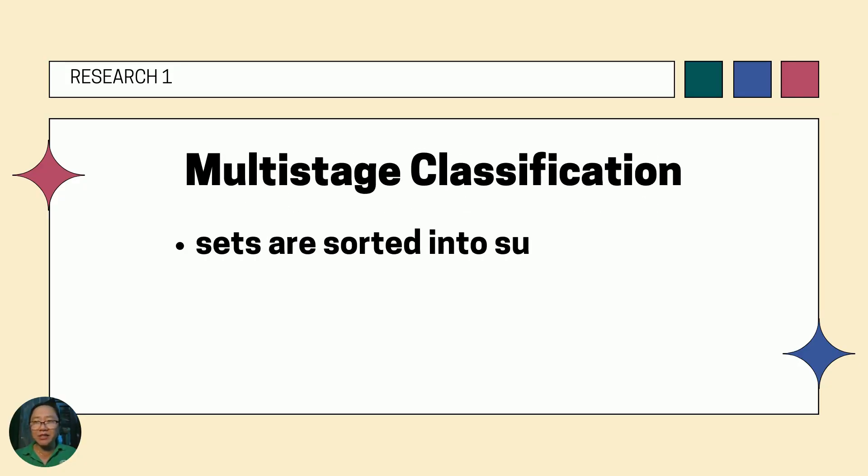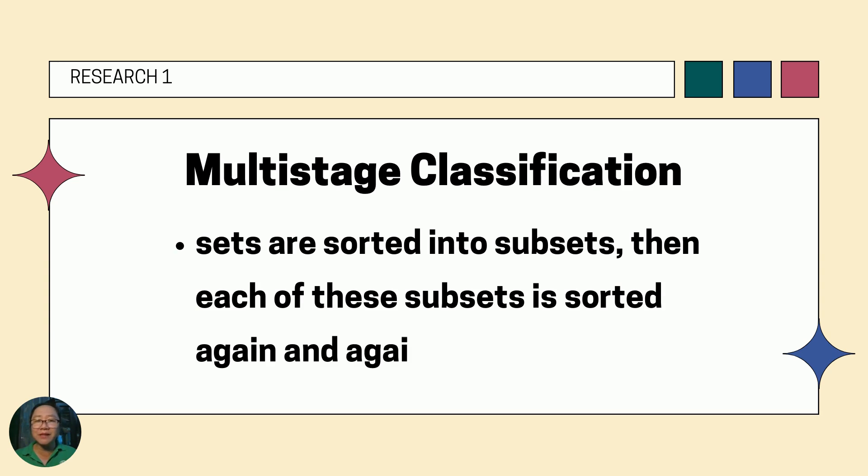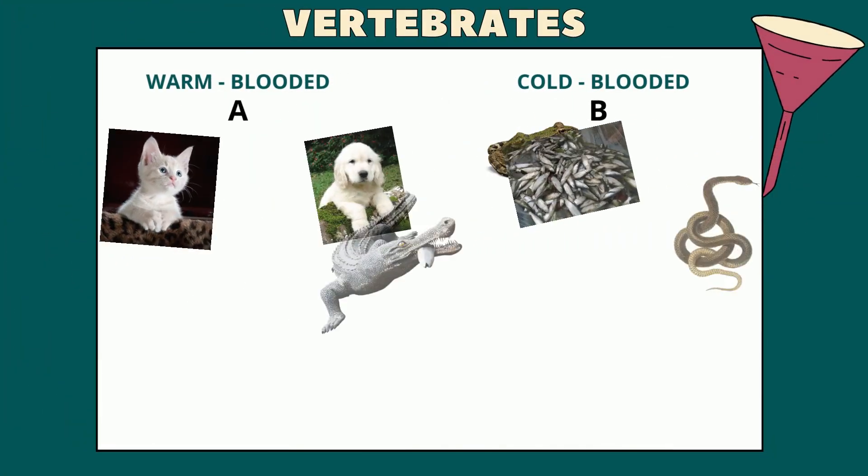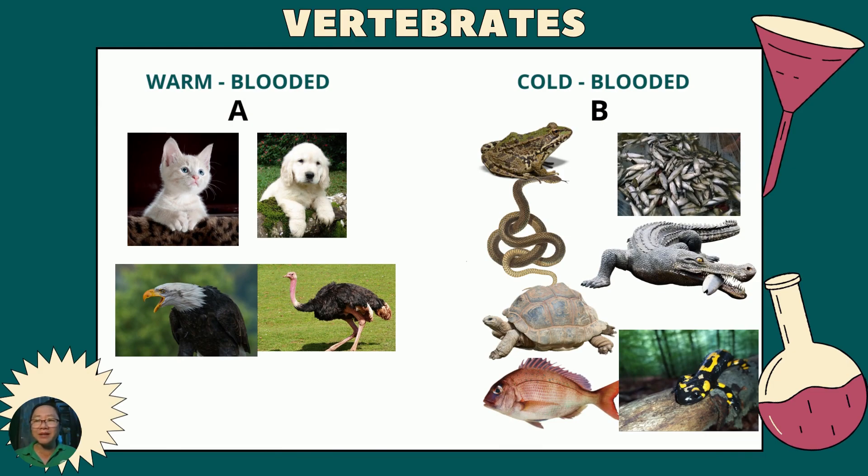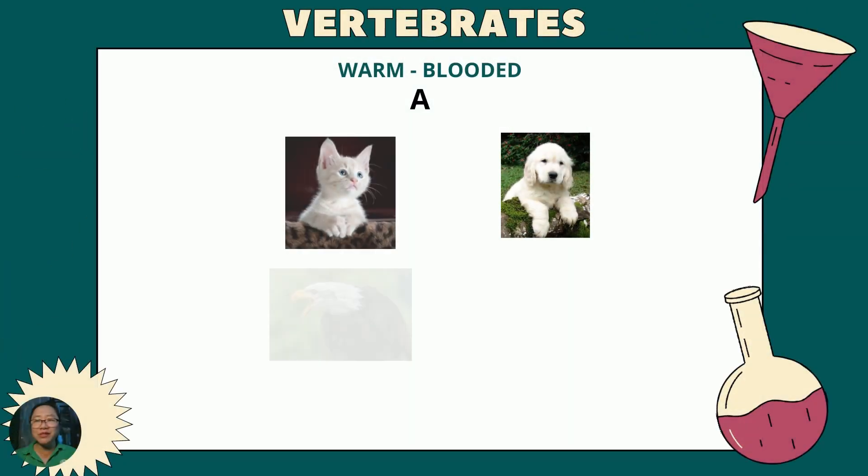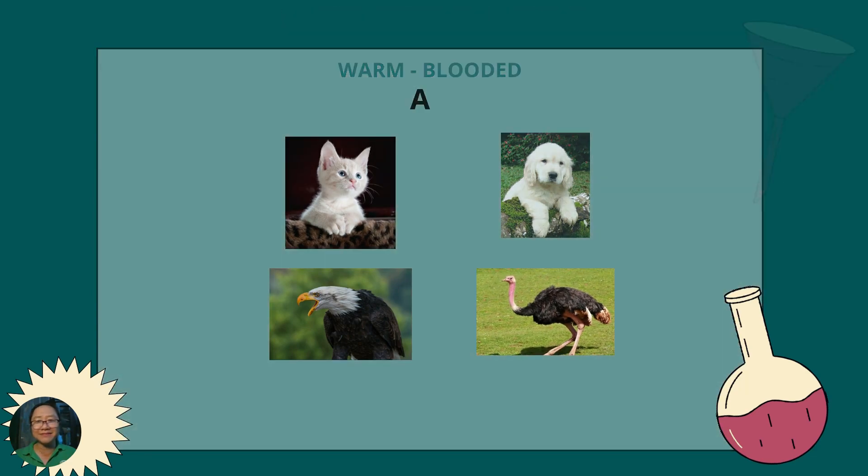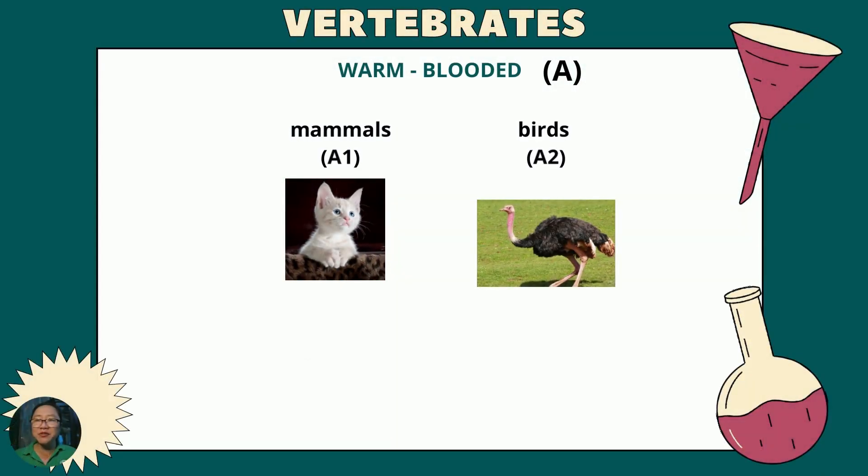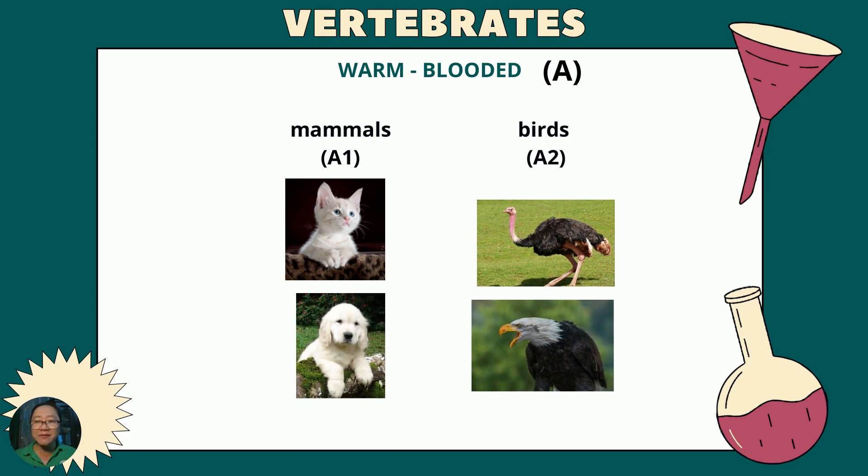Another way of sorting objects is through multi-stage classification, where sets are sorted into subsets, then each of these subsets is sorted again and again. Going back to our examples of warm-blooded and cold-blooded animals, let us sort set A first. How can we sort these warm-blooded animals? We can sort them into mammals and birds. Dog and cat are classified as mammals. We label this set as A1. While ostrich and eagle are classified as birds, we label this set as A2. This means that A2 and A1 are subsets of set A.